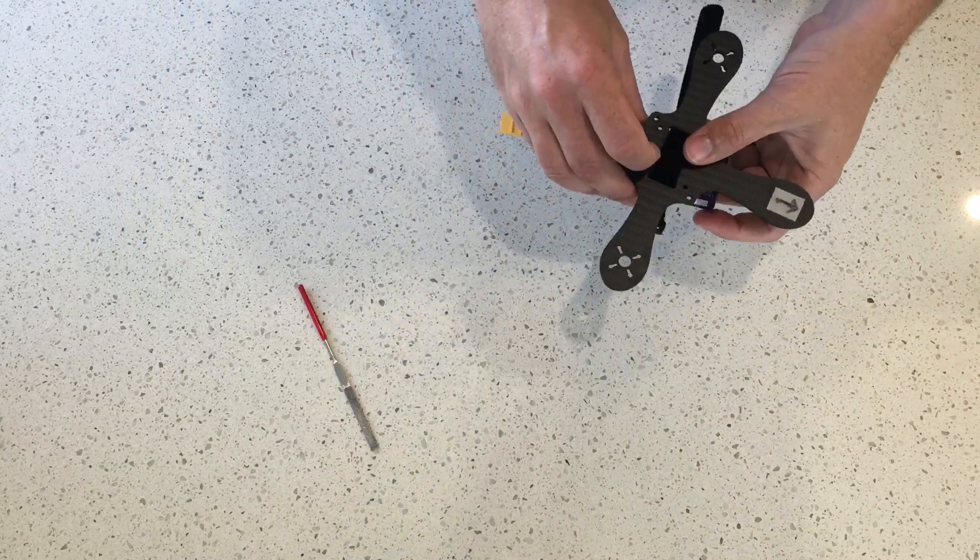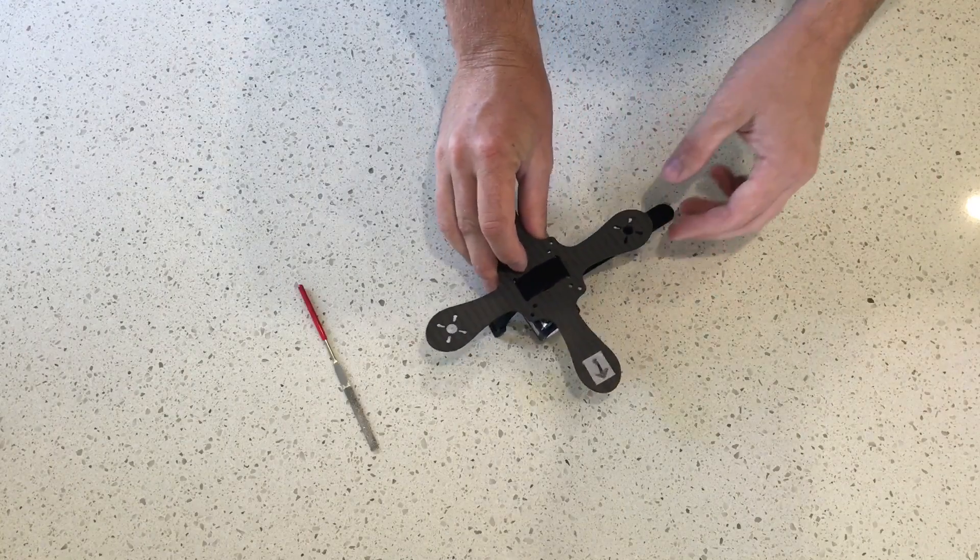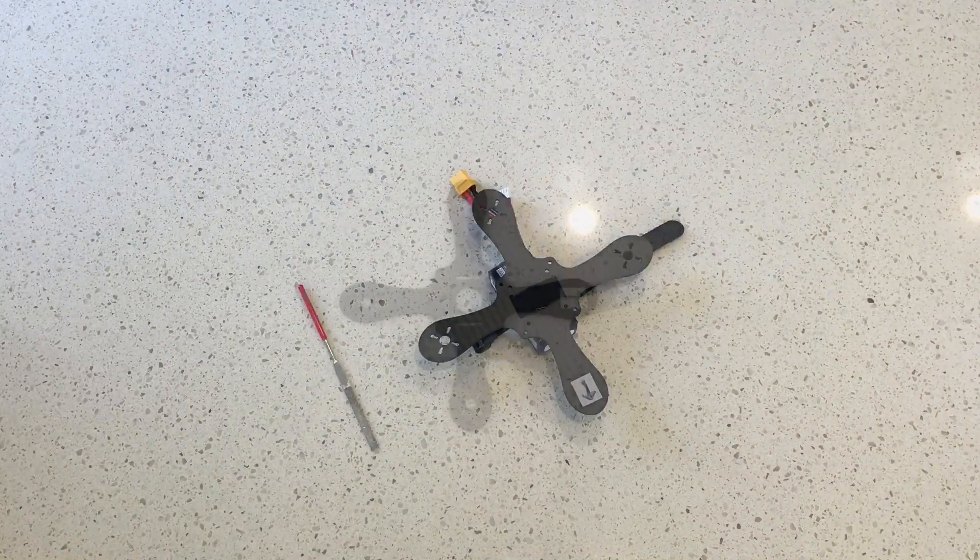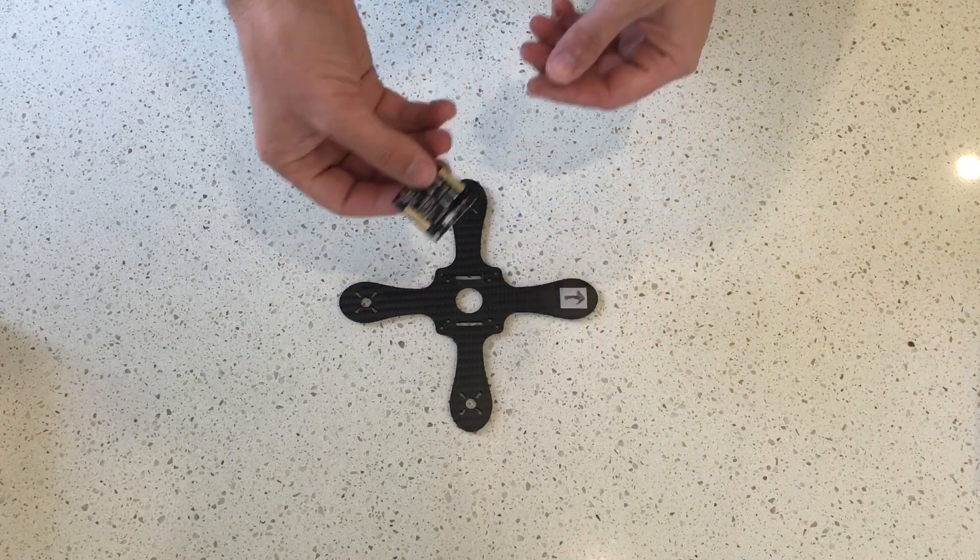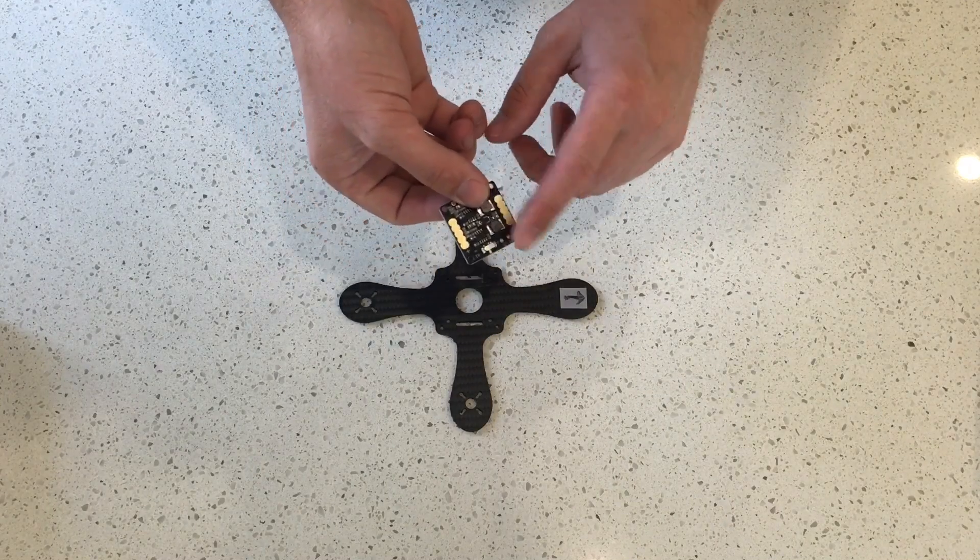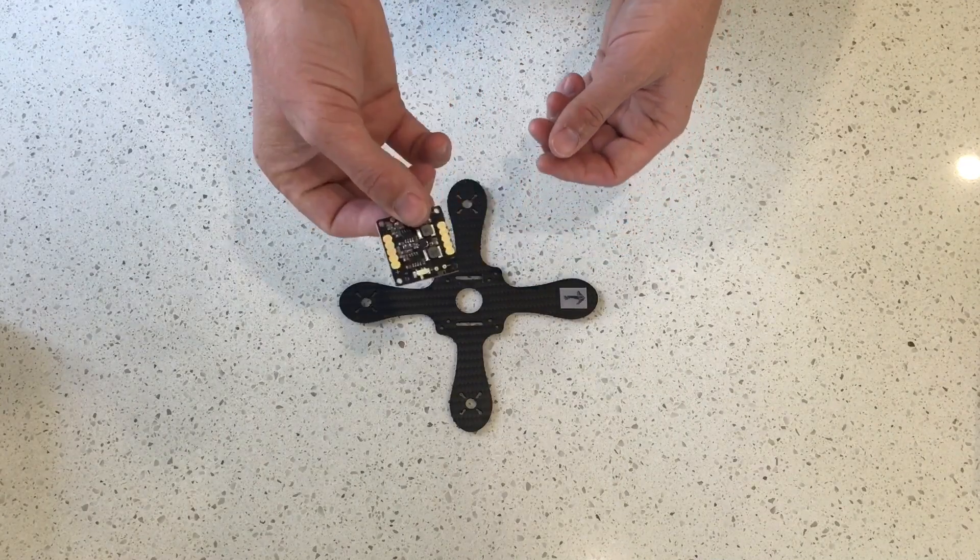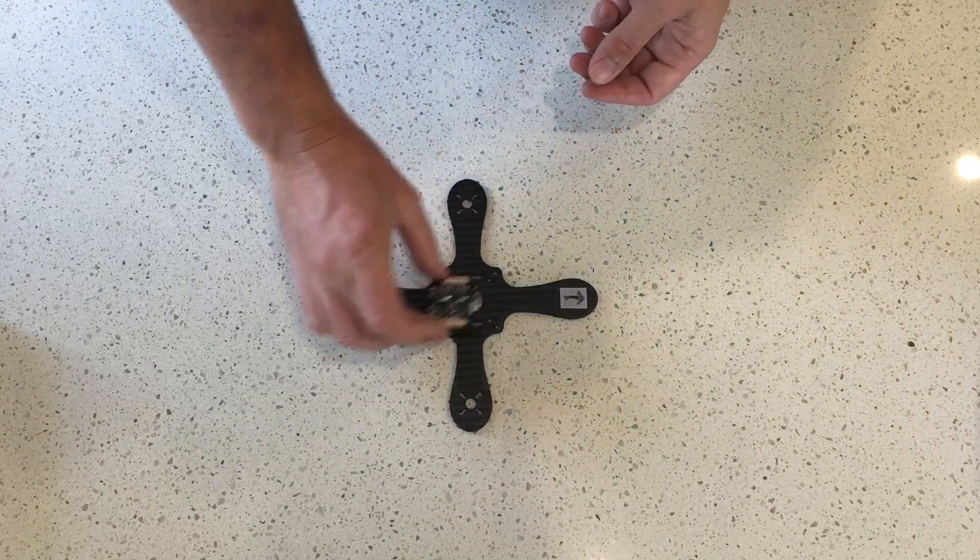With that determined, it's now on to the rest of the build. For the center stack electronics, I've chosen a 5 volt 12 volt combined PDB to be mounted at the bottom of the stack.